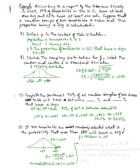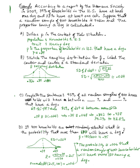We can write the answer in sentence form: the probability is 0.006 that a random sample of 400 households will have more than 180 having a dog. It would be a very unusual thing to happen. That's the end of this example.